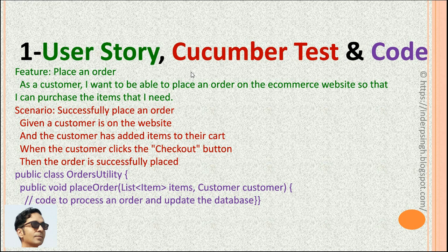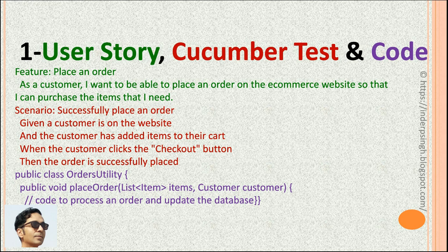Here is the Behavior Driven Development software genre with three examples. A feature is a higher level functionality provided by the system — for example, a feature can be 'place an order.' A user story explains the system behavior in non-technical language that everybody on the team can understand. So the example user story for the 'place an order' feature is: as a customer, I want to be able to place an order on the e-commerce website so that I can purchase the items that I need. Every feature is going to have a minimum of one user story, but a feature can have more than one user story.